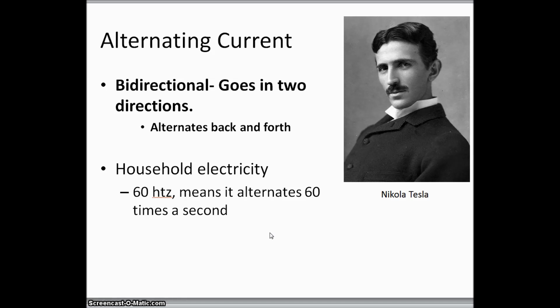So alternating current is a little bit different. As its name states, it alternates back and forth. It's bi-directional, two directions. It goes back and forth, alternates back and forth, left, right, left, right.